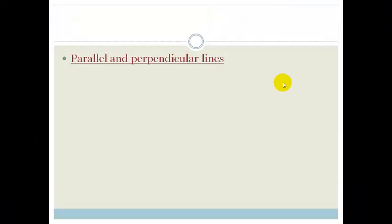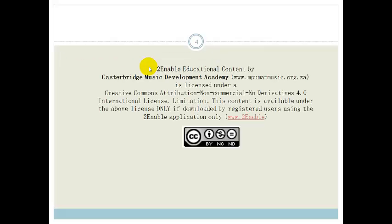Great things! I hope you've realized the most important thing here: if we take the gradient of a perpendicular line and multiply them, it equals negative 1 — in other words, they are the negative inverse of each other. Please go do lots of examples and then do the assessment at the end of the section. Have a great day.